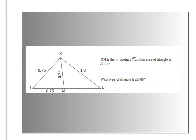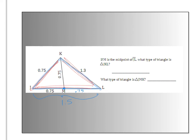Please pause the video and try to answer these two questions. If M is the midpoint of segment JL, what type of triangle is triangle JKL? Tracing JKL, we're looking at that big triangle. Since M is the middle of JL, this part is also 0.75, which means the whole side is 1.5. Looking at the three sides of the blue triangle: 0.75, 1.3, and 1.5 — they are all different, so that will be a scalene triangle.